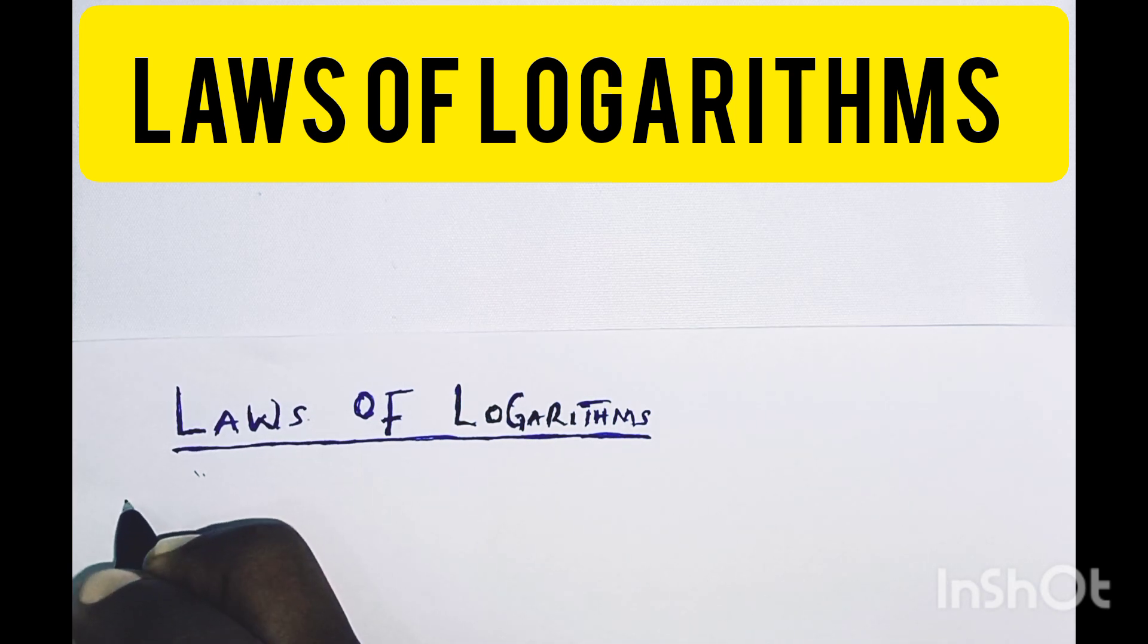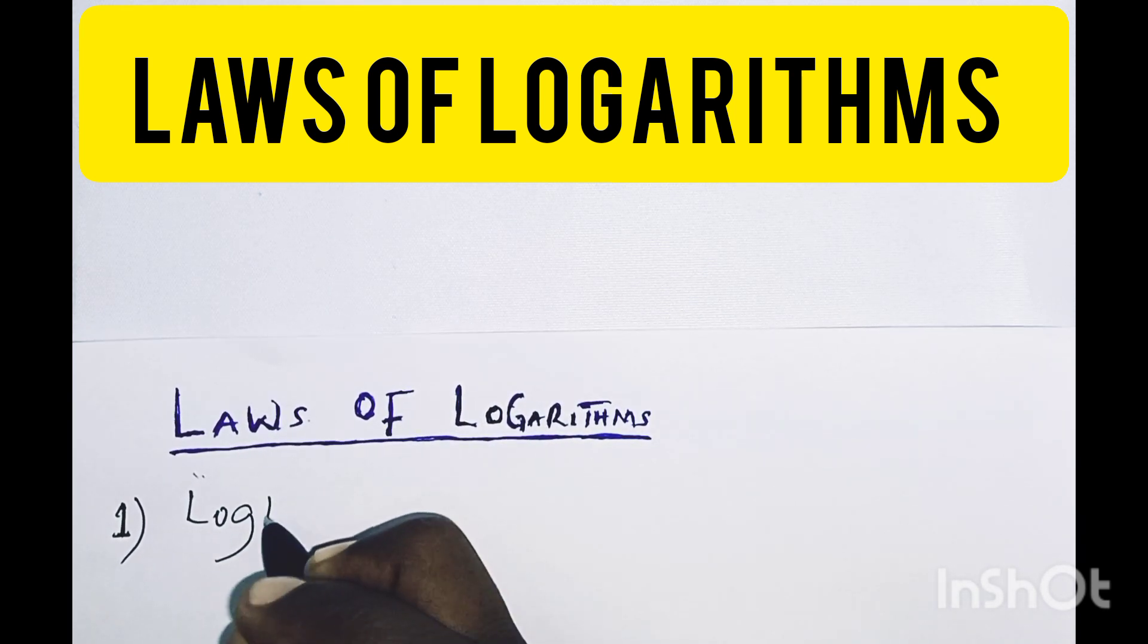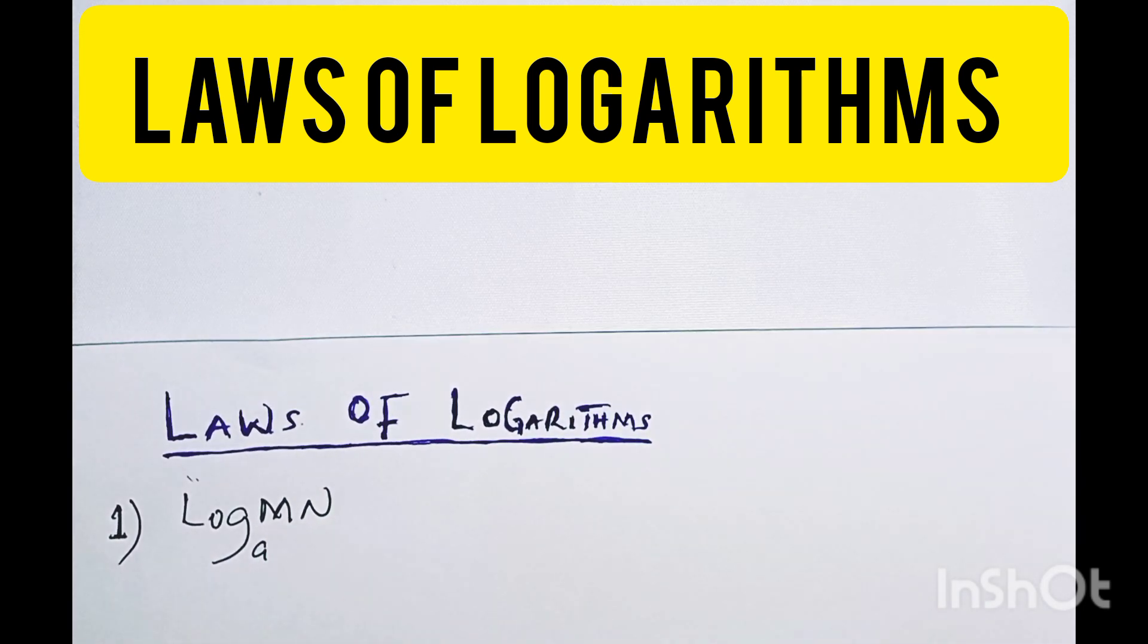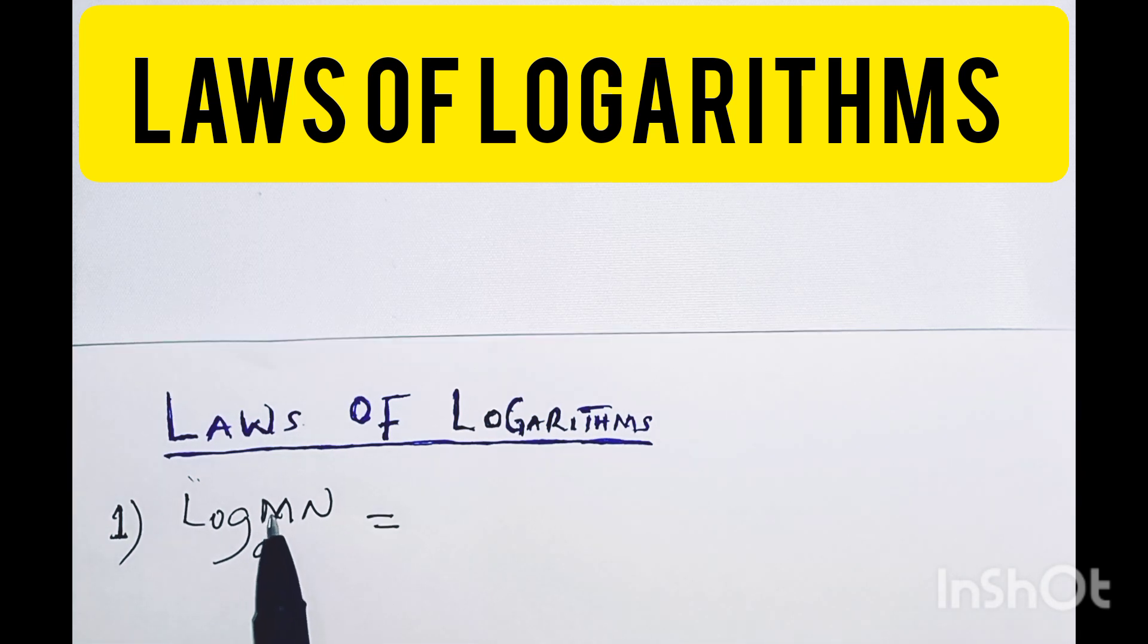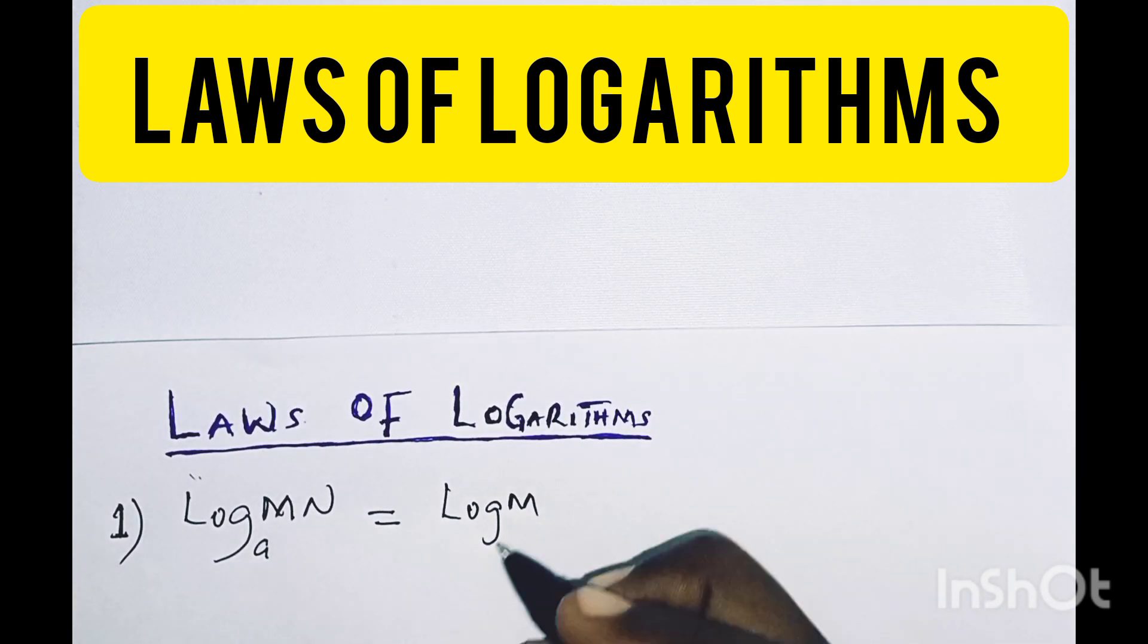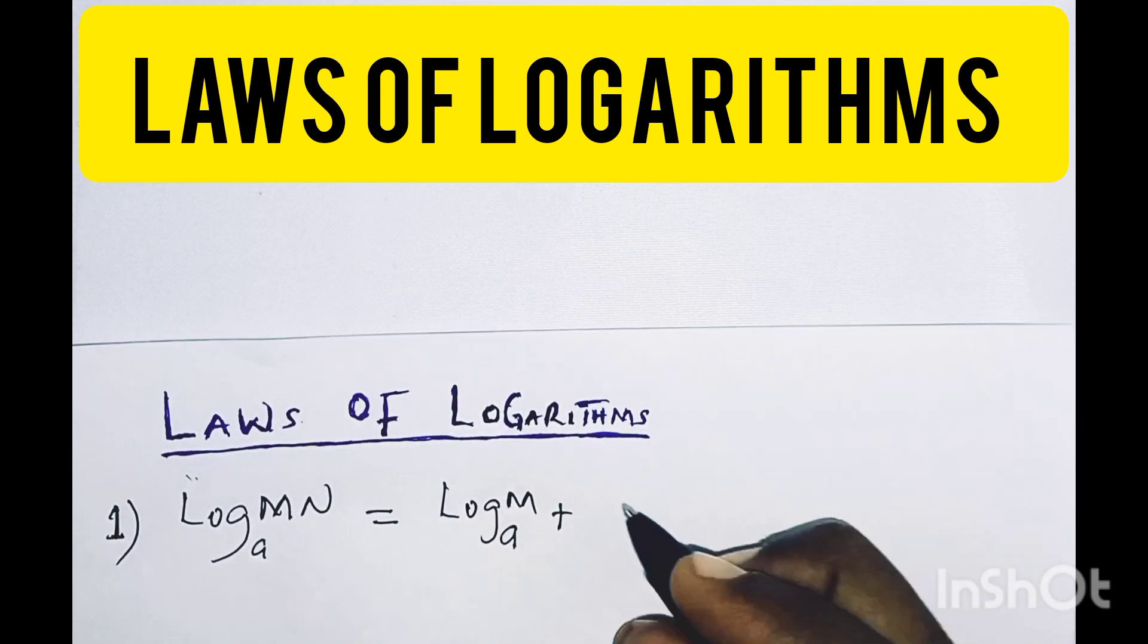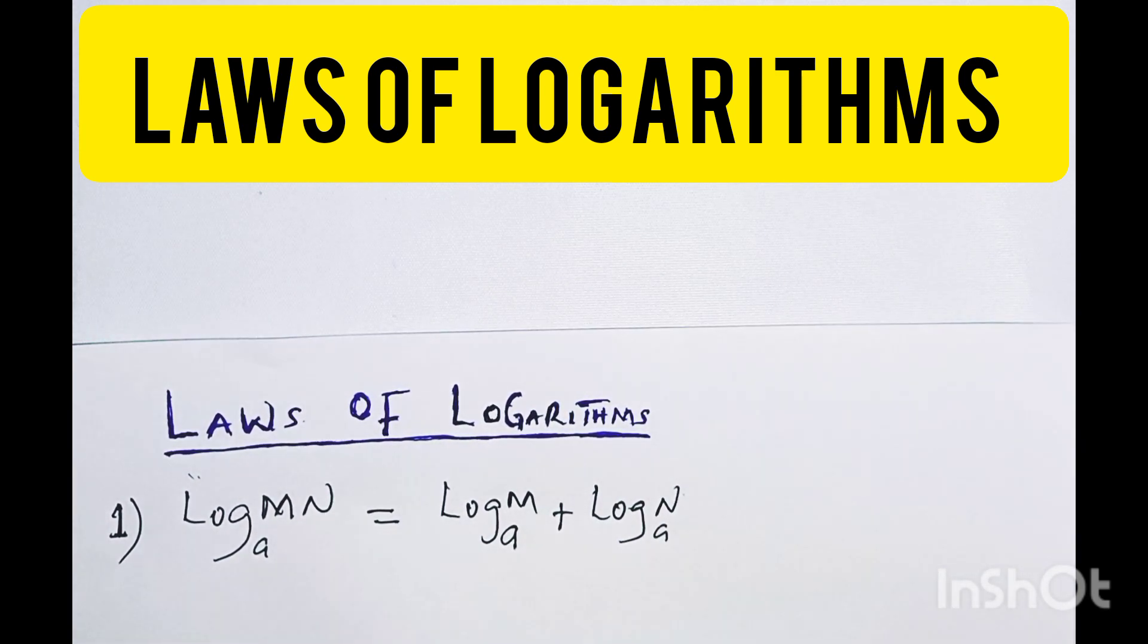According to the laws, law number 1 is if you have log base a of MN, where this is multiplication between M and N. According to the law, you are going to separate log M base a alone, then plus log N base a alone. So this is the first law of logarithm, which is called multiplication law.